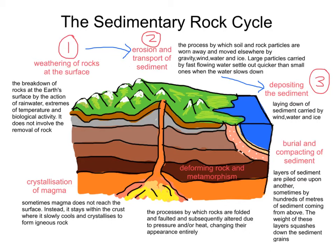It's then when we get burial and compacting of sediment — stage four. Layers of sediment are piled upon one another, sometimes by hundreds of metres of sediment coming from above. The weight of these layers squashes down the sediment grains, forcing any water out between them, and that helps to cement them together into a solid piece of rock. These are known as the sedimentary rocks. Some examples: limestone, sandstone, shale, and chalk — four sedimentary types of rocks.